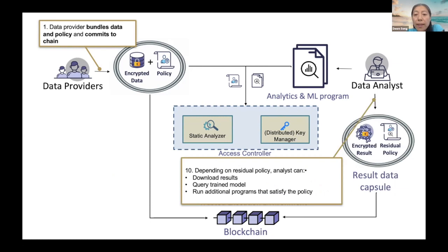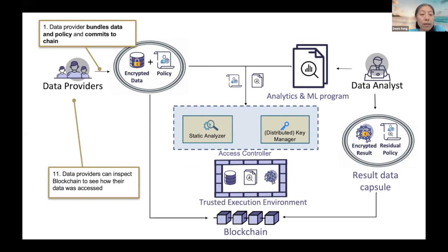The final results will be encrypted with the residual policy, and the results and residual policy will be committed to the blockchain. Depending on the residual policy, the analyst can then download the results and query additional programs that satisfy the remaining residual policy. Data providers and other authorized parties can inspect the blockchain at any time to see how their data has been used. The blockchain stores essentially the commitments, while the actual data can be stored in a decentralized storage system for availability.